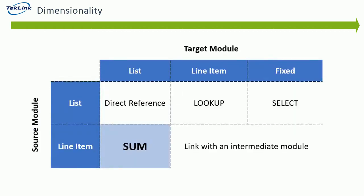During this video, we're going to use this reference table to show what changes in dimensionality correlate with which formula we want to use. For example, as previously discussed, if the list of the source modules are the same as the ones in the target module, then a direct line item reference is all that is needed to link the tables together.